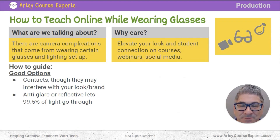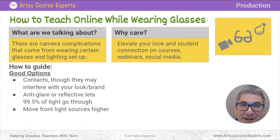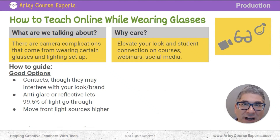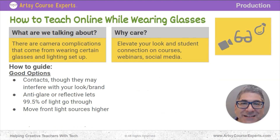Anti-glare, anti-reflective — just a great thing to have. The next most important thing you can do when wearing glasses on camera is to move any light sources that are directly in front of you higher — even eight inches, even a foot, or at a slightly different angle. If there's a ring light right behind the camera, you're better off moving it much higher. If there's a window right in front of you behind the monitor, that window is going to shine right through onto your glasses.